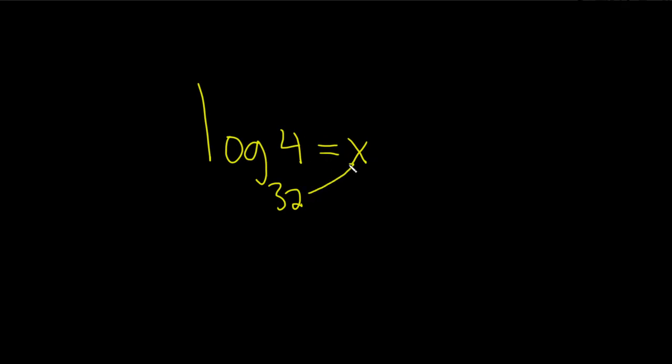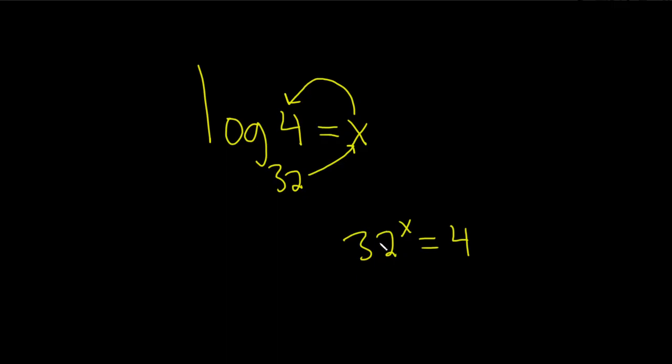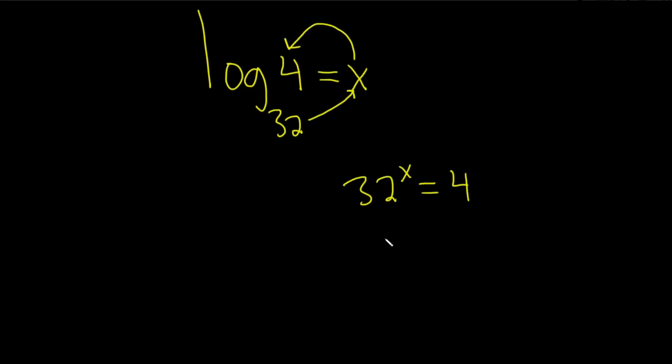So we have 32 to the x equals 4. And now we want to write both sides using the same base. So let's try to use 2.